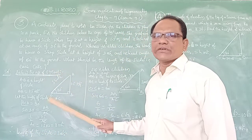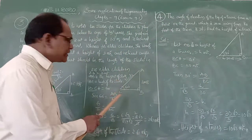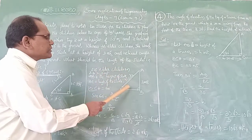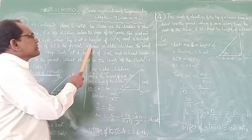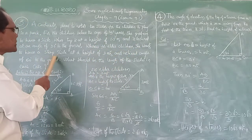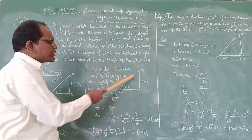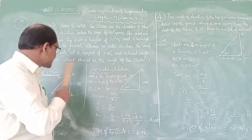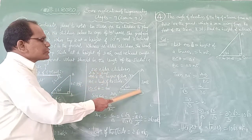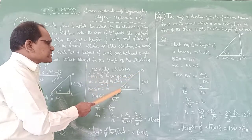Now for Case 2 — for elder children. The height of the slide is 3 meters and the inclination angle is 60 degrees to the ground. AB equals 3 meters as given. AB is the height of the slide and AC is the length of the slide which we need to find.